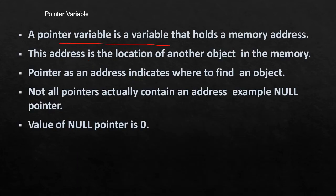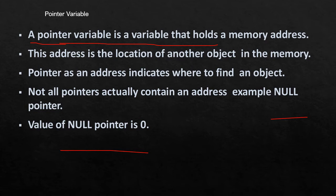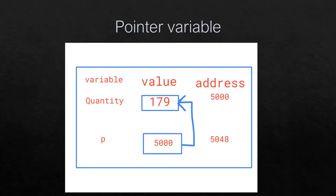In the case of pointers, a pointer is a variable that holds a memory address. A normal variable holds a value such as 179, but a pointer variable holds a memory address — that is the major difference between a normal variable and a pointer variable.